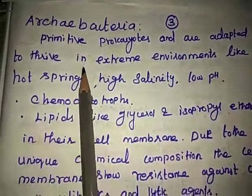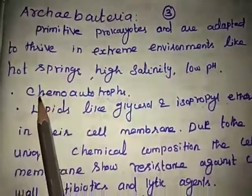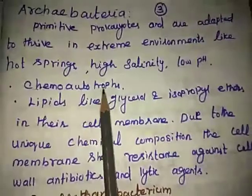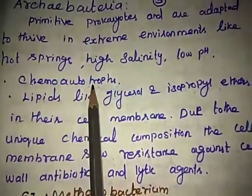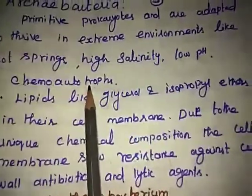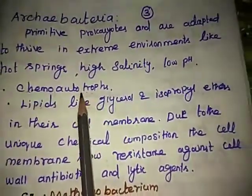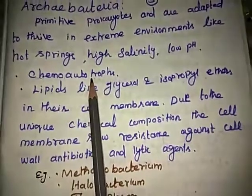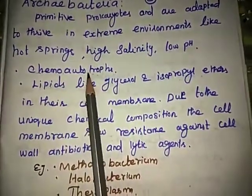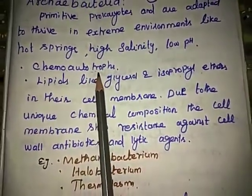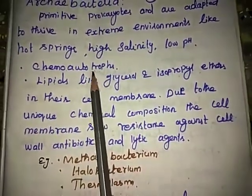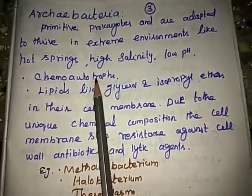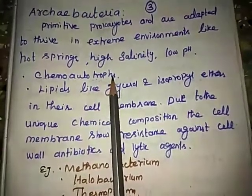Most Archaebacteria are chemoautotrophs, meaning they do not have photosynthetic pigment and hence cannot use sunlight energy. These bacteria obtain energy from organic substances.